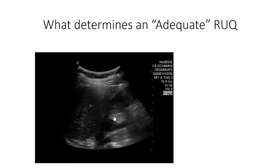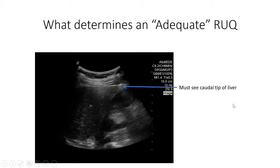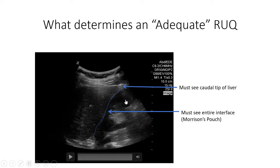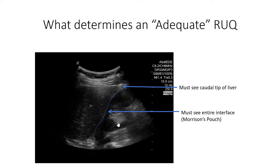What determines an adequate right upper quadrant scan - how can I say I've seen enough to call something negative? For the right upper quadrant, you need to see the caudal tip of the liver and the entire interface between the kidney and the liver, known as Morrison's pouch. If there's no fluid in Morrison's pouch, you can see all the way to the caudal tip, and you've swept through such that the kidney disappears on both sides with no fluid visible, you can call that a negative scan. Fluid at any time in the interface or around the caudal tip is a positive scan.